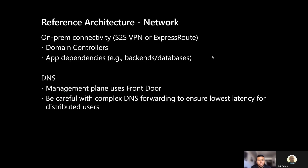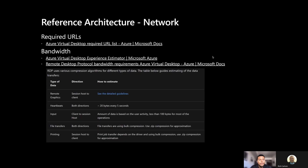For the reference architecture, the networking components are primarily site-to-site VPN or ExpressRoute, as mentioned earlier. There are also different app dependencies to think about, as well as DNS, which can be managed with Azure Front Door. Be careful with complex DNS forwarding to ensure the lowest latency is available for users. We also have in Microsoft Docs a list of required URLs that need to be accessible for Azure Virtual Desktop, which we'll also share out.